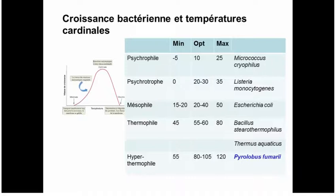The proteins of thermophilic and hyperthermophilic bacteria are intrinsically resistant to heat denaturation. A big example for biotechnology and molecular biology is Taq polymerase — DNA polymerase from Thermus aquaticus — which stays active even when heated to 95 degrees for several cycles in a PCR reaction.